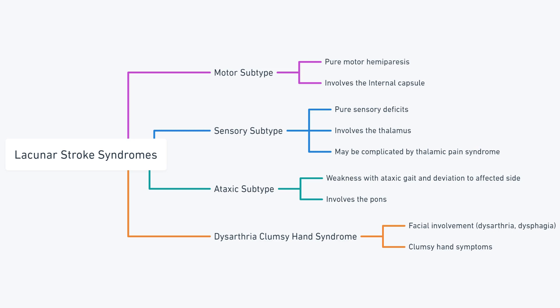Lastly, dysarthria clumsy hand syndrome is characterized by facial involvement, i.e. dysarthria, dysphagia, and clumsy hand, as the name suggests.